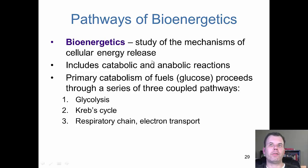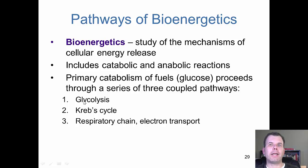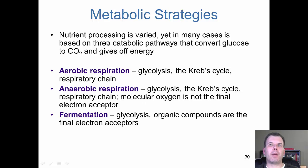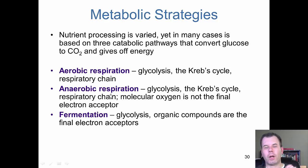Bioenergetics is the study of cellular energy release. The main catabolic process is glucose being broken down through three steps: glycolysis, Krebs, and the respiratory chain or electron transport. Most bacteria do aerobic respiration — breathing oxygen through glycolysis, Krebs, and the respiratory chain, just like we do. Anaerobic respiration involves all three steps but uses nitrate, nitrite, sulfate, or sulfite instead of oxygen — bacteria can do this, but humans cannot.